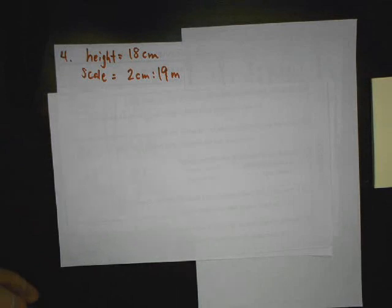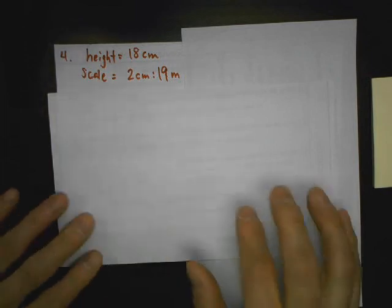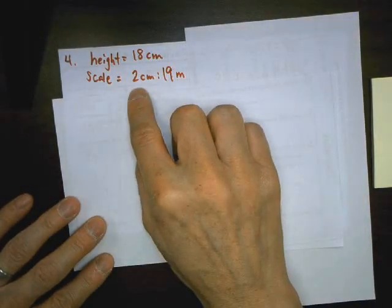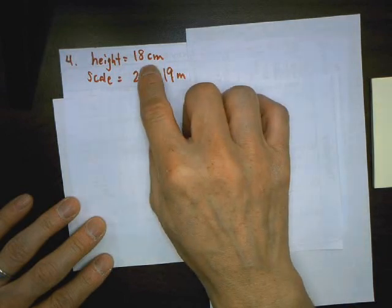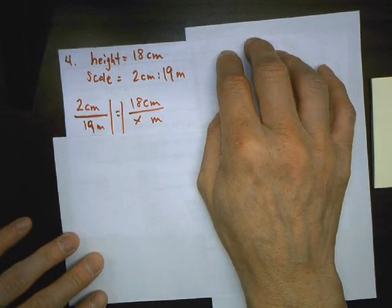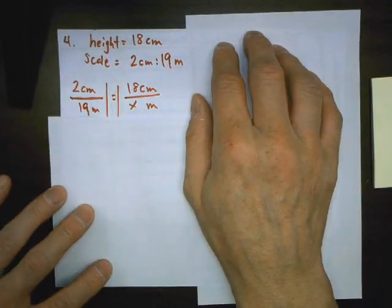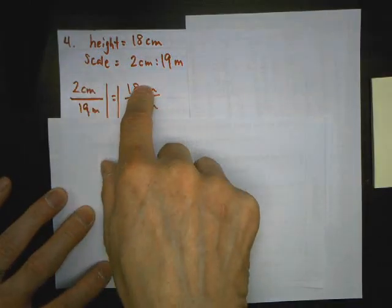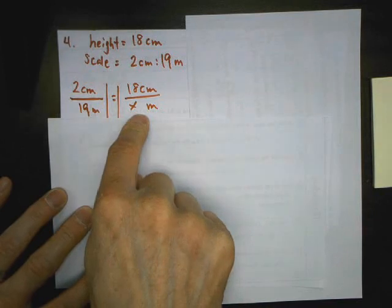Number four, they give us the height of a tower and they say it's a scale drawing, which means the scale is going to be proportional to the real thing. So the scale is two centimeters to 19 meters, so every two centimeters equals 19 meters, and the drawing is 18 centimeters. So what I do is I just write a proportion since it's proportional. I put centimeters on top, meters on the bottom. Over here, centimeters on top is how many meters?